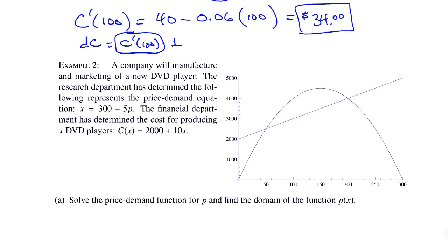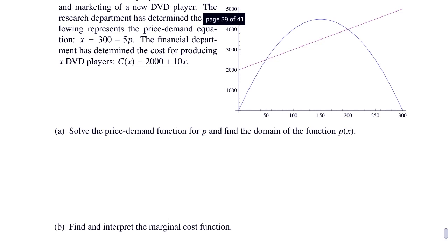Example two: a company will manufacture and market a new DVD player. The research department determined the price-demand equation is X equals 300 minus 5P. The financial department determined the cost of producing X DVD players is C of X equals 2000 plus 10X. Question A: solve the price-demand function for P and find the domain of P of X.